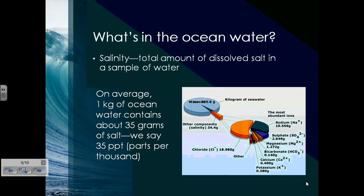To recap what's in the ocean's water: salinity represents the total amount of dissolved salt in a sample of water. On average, 1 kilogram of ocean water contains about 35 grams of salt. Since 1 kilogram is about 1,000 grams, that means 35 grams out of 1,000 is salt — that's quite a lot, and trust me, if you tasted it, you would know.